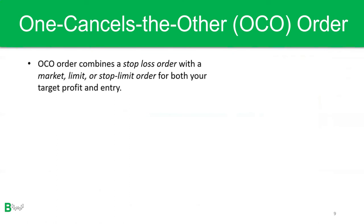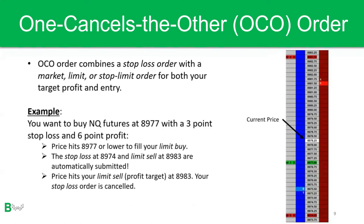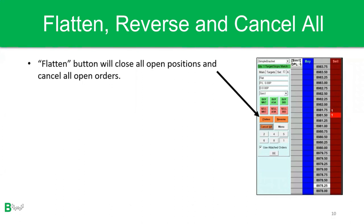Lastly, let's talk about One Cancels the Other orders, or OCO orders. An OCO order combines a stop loss order with a limit or stop limit order for both your target profit and entry. For example, if you want to buy NQ futures at 8977 with a three-point stop loss and a six-point profit target, once price hits your entry at 8977 or lower to fill your limit buy, the stop loss at 8974 and limit sell at 8983 are automatically submitted. Once price hits either the limit sell or the stop loss, the other order is automatically cancelled.